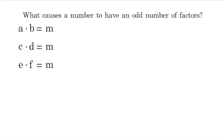So we have to think, what would cause maybe one factor to come out of a pair? And it turns out that if we can write m as g times g, or g squared, then we have only g coming out of that pair, meaning that we now have an odd number of factors.